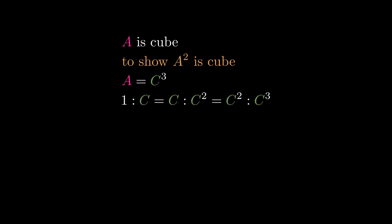1 to c is proportional to c to c squared, which is proportional to c squared to c cubed. So we have the continual proportion 1 to c to c squared to c cubed, where 1 and c cubed have two mean proportions.